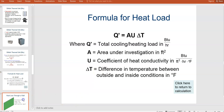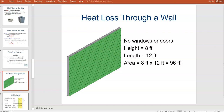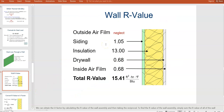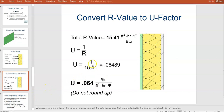We're looking at heat loss through a wall with no windows and no doors — it's 8 by 12, which is 96 square feet. Think of the layering of the interior of the wall. Each layer has an R value for how well it retains heat. The air film and drywall don't retain heat very well. The insulation has a value of 13 — R13 insulation is what you'd see shopping. When we add all these up, the R value is 15.41, giving a U value of 0.064.